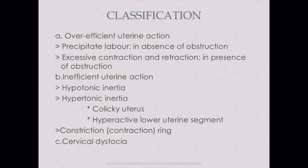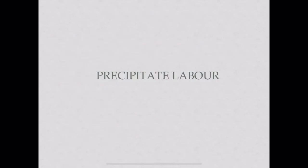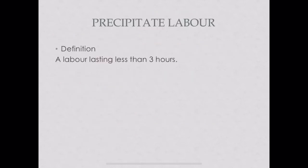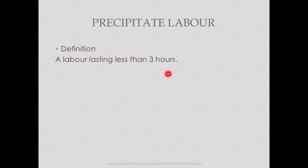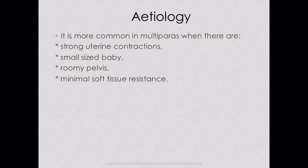Starting with precipitate labor under over-efficient uterine action: the definition is any labor that lasts for less than three hours. For example, if contractions start at 10 AM and by 1 PM both the baby and placenta have been delivered, that is termed precipitate labor.